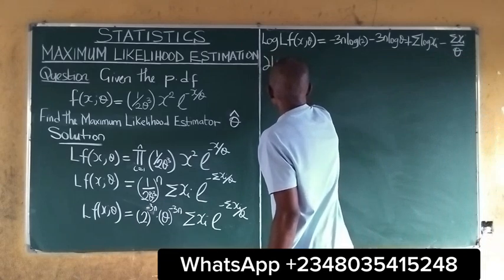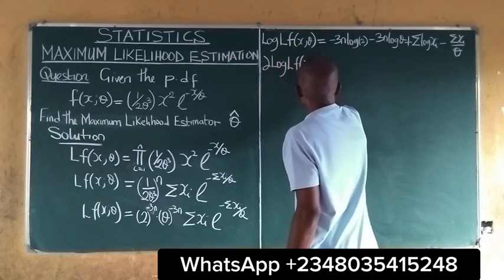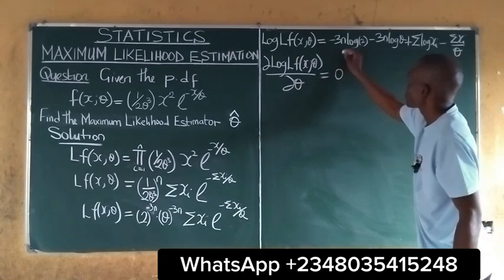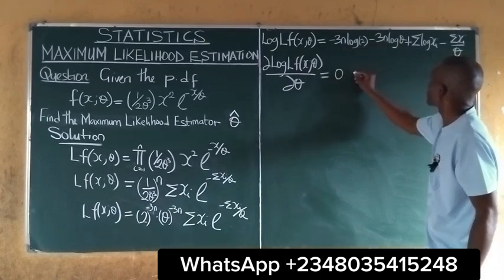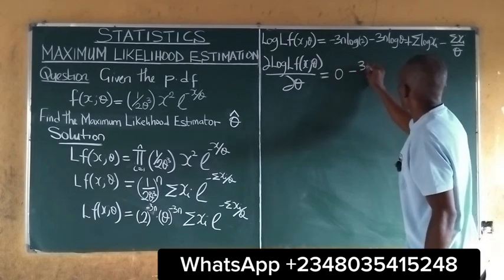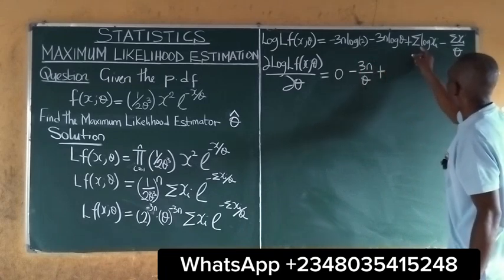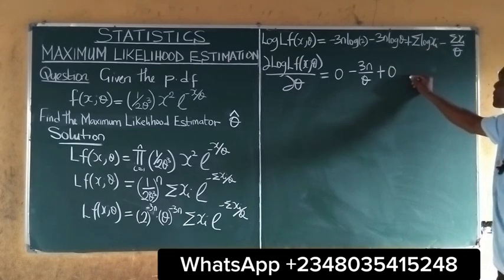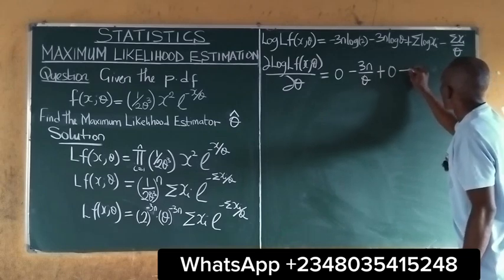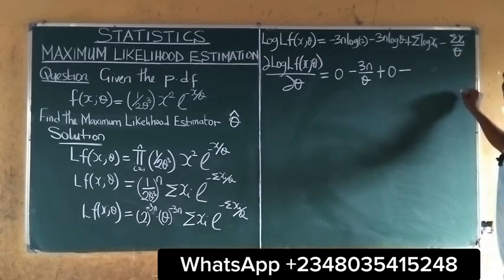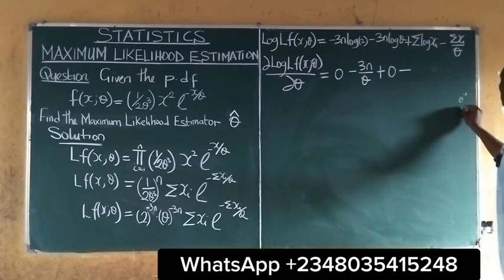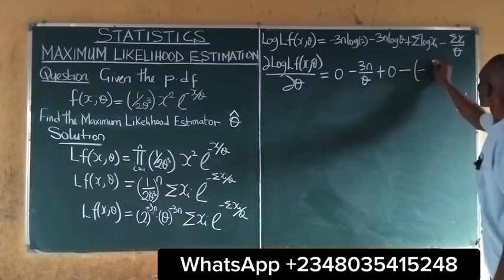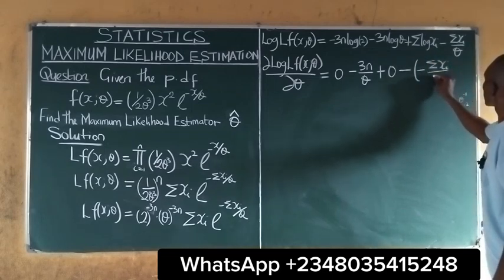The next step in maximum likelihood estimation is to differentiate with respect to theta. Differentiating with respect to theta: if we differentiate the first term there is no function of theta so we get zero. If we differentiate the second term we get negative 3n all over theta. The third term also gives zero as there is no theta. Then minus — differentiating the last term with respect to theta we get negative minus 2 theta, giving us minus summation of xi all over theta squared.